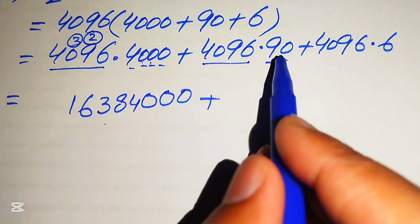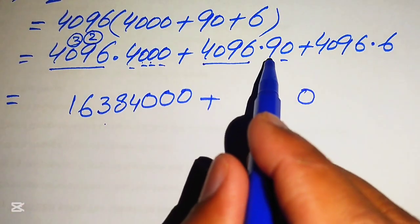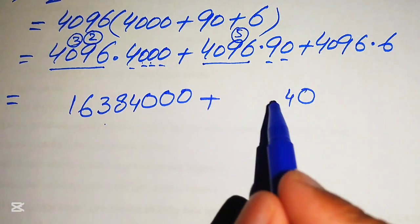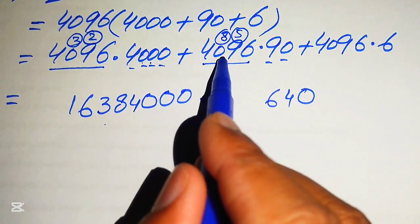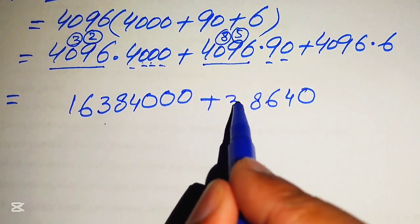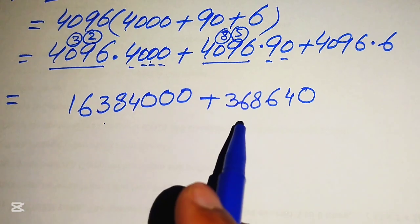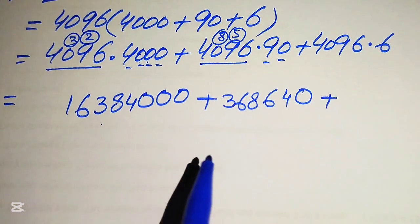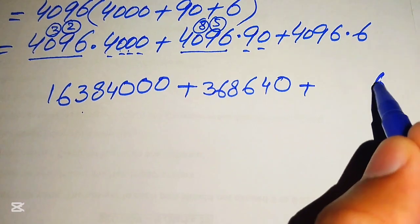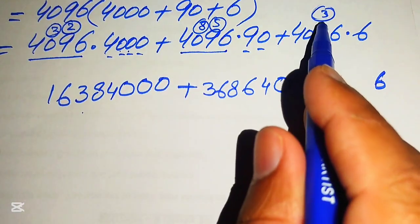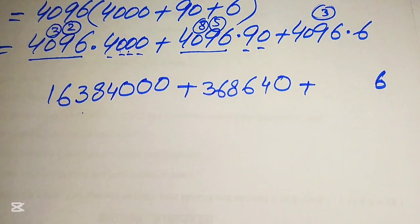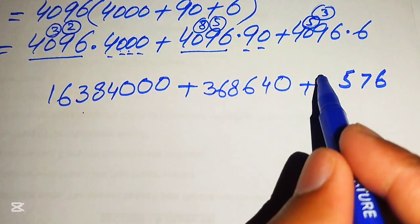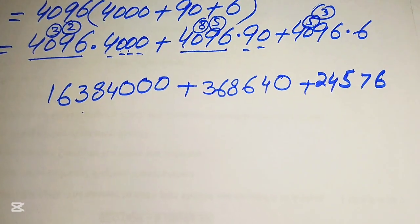For 4096 × 90: multiplying by the trailing zero gives 0, then 9 × 6 is 54 (write 4 carry 5), 9 × 9 is 81 plus 5 is 86 (write 6 carry 8), 9 × 0 is 0 plus 8 is 8, and 9 × 4 is 36, giving 368,640. For 4096 × 6: 6 × 6 is 36 (write 6 carry 3), 6 × 9 is 54 plus 3 is 57 (write 7 carry 5), 6 × 0 is 0 plus 5 is 5, and 6 × 4 is 24, giving 24,576.